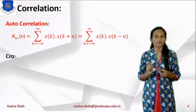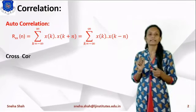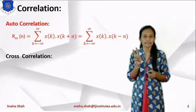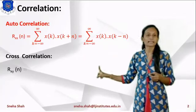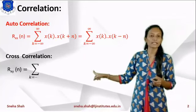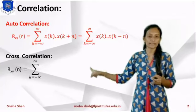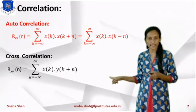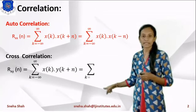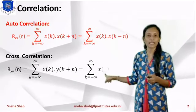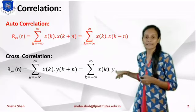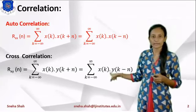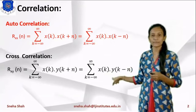The next type of correlation is cross-correlation, which means the relation between x with y — two different signals. The cross-correlation is represented as rxy of n equals to summation k equals to minus infinity to infinity of x(k) into y(k+n), because we have to compare x with y.